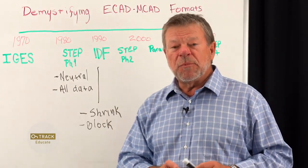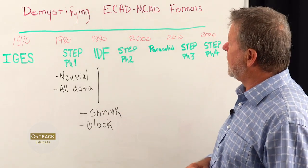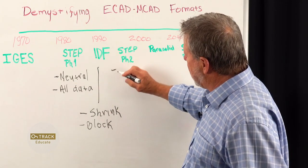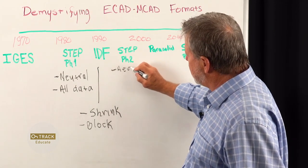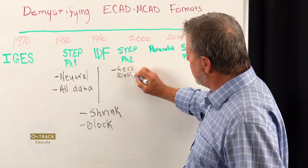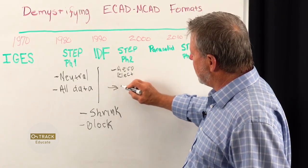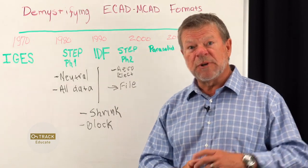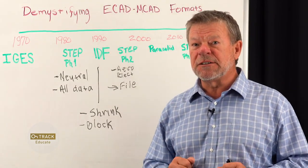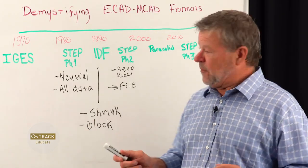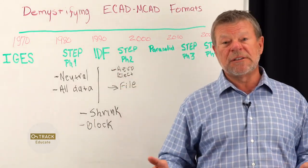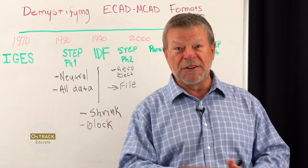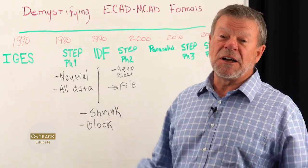About 1998, STEP was updated into what I'm calling phase two. The primary enhancements were adding a lot of applications for aerospace and electronic applications, but they did not really address the file size too much. So we're covering more industries and have more specific applications, but we're still dealing with huge files that have to be passed. If you were an engineer at that time, it could take overnight to send a large project — end of the day you'd hit send and hope when you came in the next morning it had all gone through.